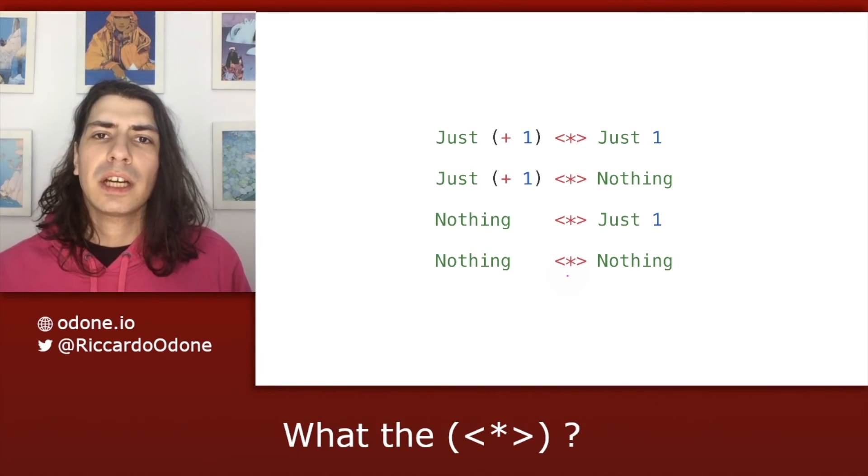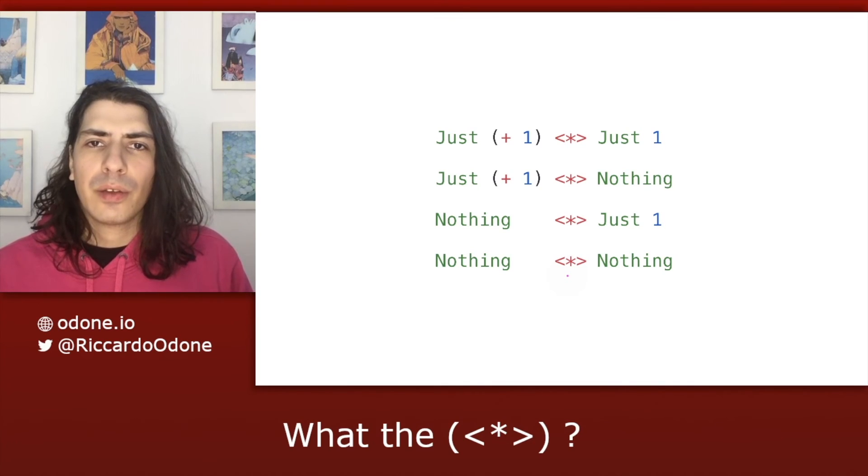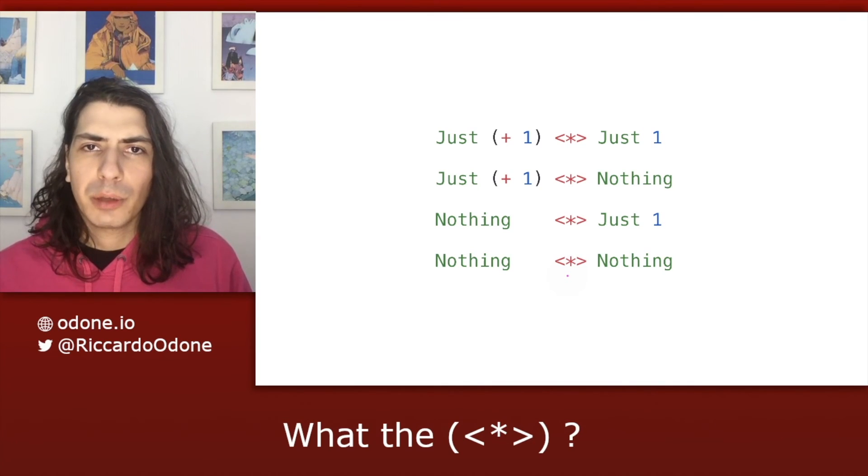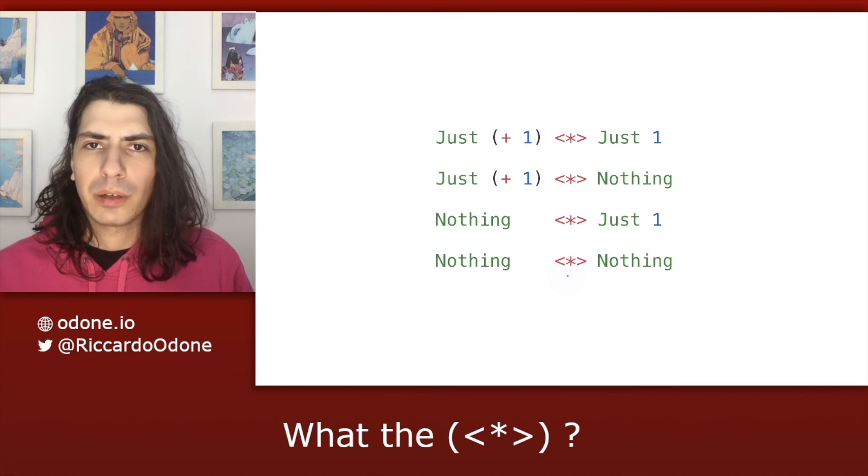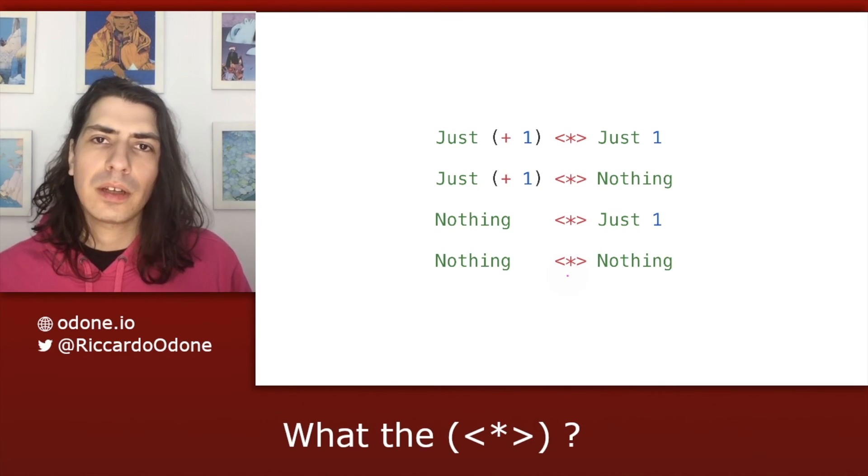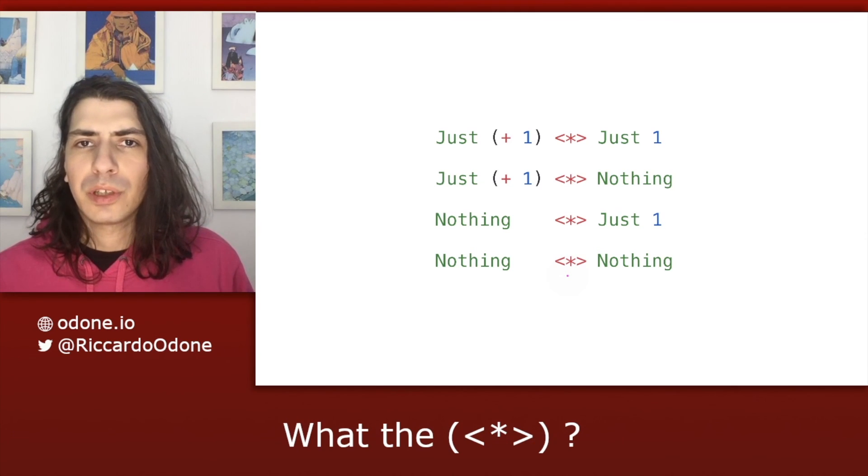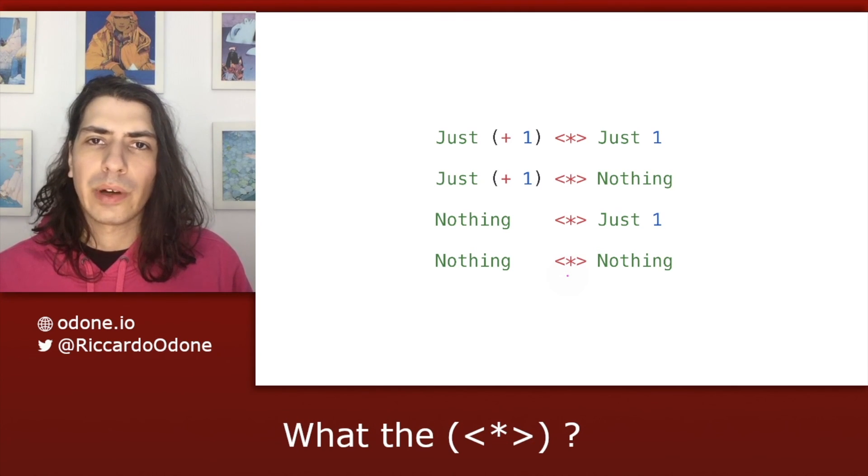So the idea in maybe is that if there's a nothing on either side of the operator, we get out a nothing, no matter what. If we have both just, then the step function is applied to the value wrapped in the right just, and we return the result wrapped in a just again.